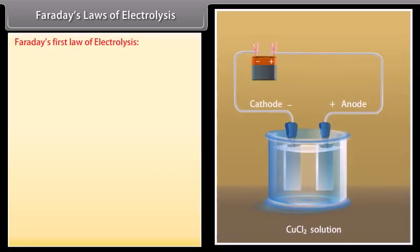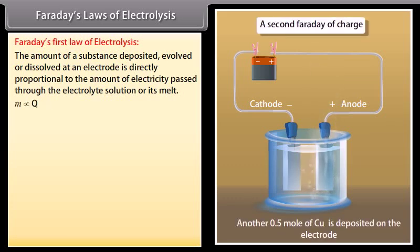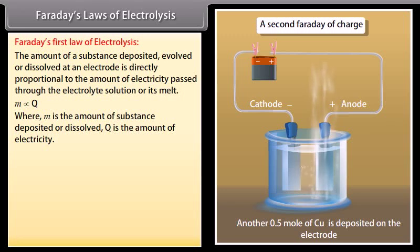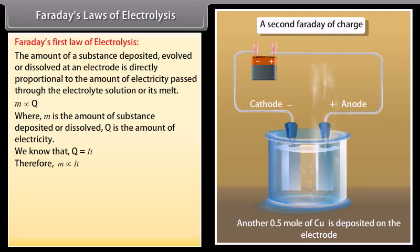Faraday's laws of electrolysis. Faraday's first law of electrolysis: the amount of a substance deposited, evolved, or dissolved at an electrode is directly proportional to the amount of electricity passed through the electrolyte solution or its melt. M is directly proportional to Q, where M is the amount of substance deposited or dissolved and Q is the amount of electricity. We know that Q equals IT. Therefore, M is directly proportional to IT. It can be written as M equals ZIT, where Z is called electrochemical equivalent of the substance.